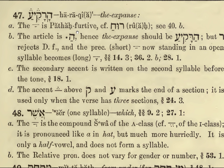So not HaRaQiang, but HaRaQiang — because an open syllable that's not stressed will take the long vowel. And there's a secondary accent, which is written on the second syllable before the tone. We have accent marks here, above the Quf and the line, and these mark the end of a section. We only have this when a verse has got three sections.